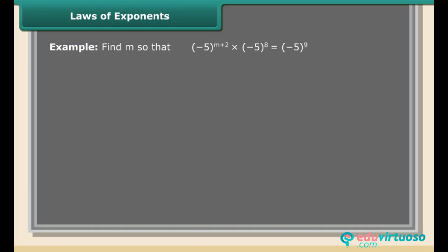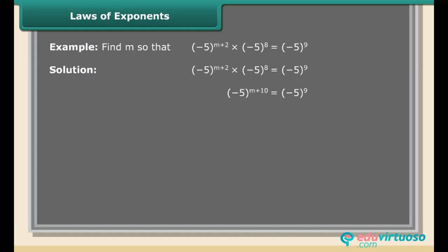Example: Find m so that (−5)^(m+2) × (−5)⁸ = (−5)⁹. Solution: (−5)^(m+2) × (−5)⁸ = (−5)^(m+2+8) = (−5)^(m+10) = (−5)⁹. Equating the exponents: m + 10 = 9, so m = 9 − 10 = −1.